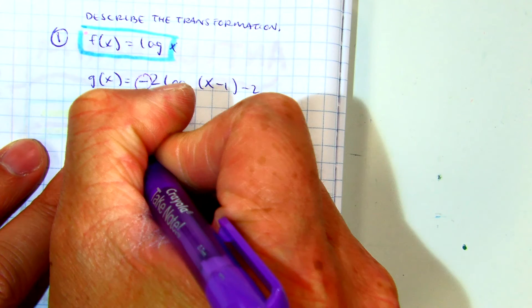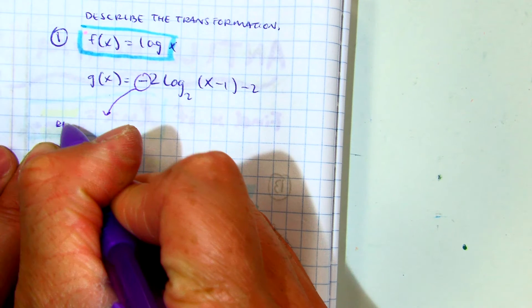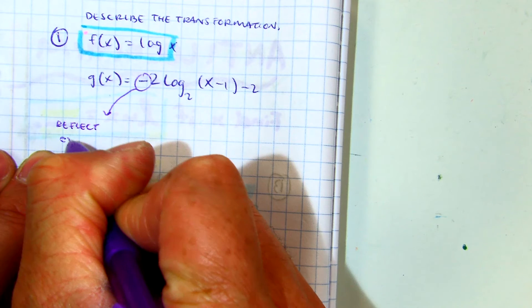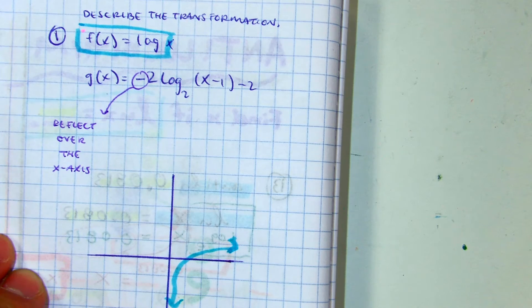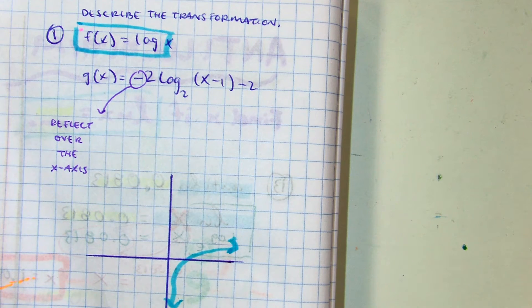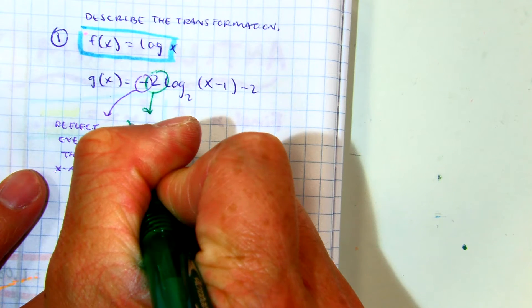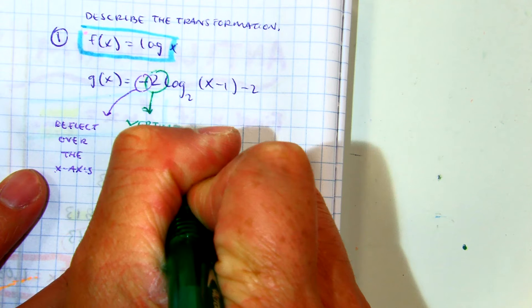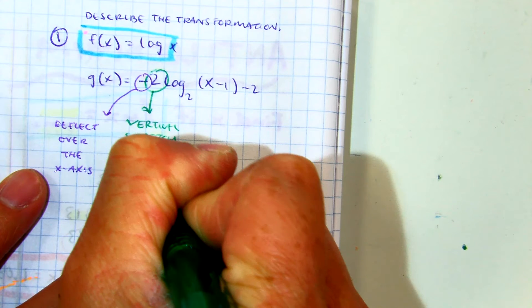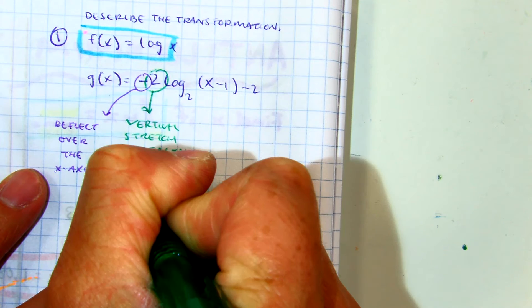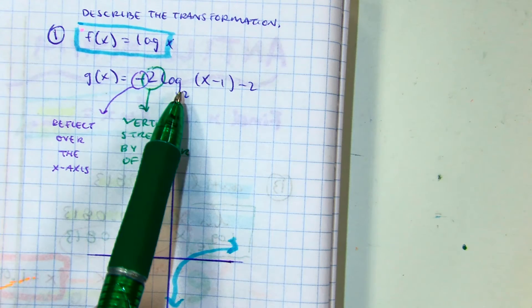Class, what does this negative do? What does it do? Okay. How about this 2? What kind of a stretch? What kind of a stretch by a factor of 2? Log base 2 is not important to you.